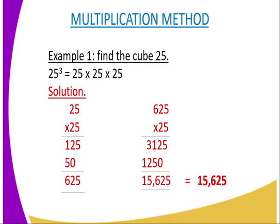That is step number one. You take 25, multiply by 25, and the answer becomes 625. And the next step, you are supposed to take the 625, then you further multiply by 25, then the answer becomes 15,625. And therefore, that becomes 15,625 as the answer of 25³, or the cube of 25.